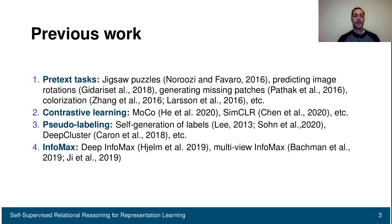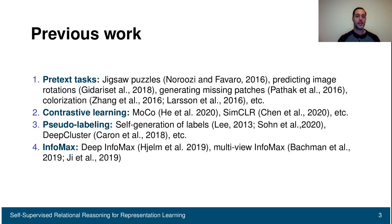Another way is to define a contrastive loss, as done in methods like MoCo and SimCLR, which achieve state-of-the-art in self-supervised learning. In pseudo-labeling, we generate pseudo labels and then perform supervised classification on top of these labels. In the InfoMax method, we maximize mutual information to help learn representations — this is done, for instance, by Deep InfoMax and Multi-View InfoMax.